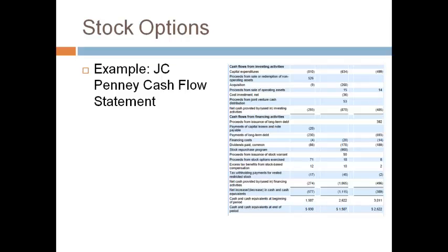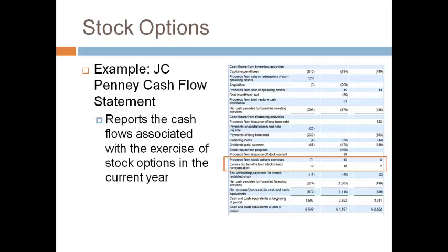Activity related to stock options is reported in the financing section of the cash flow statement. Take a moment and see if you can identify the line items related to stock options. The line items are proceeds from stock options exercised and the excess tax benefits from stock-based compensation.